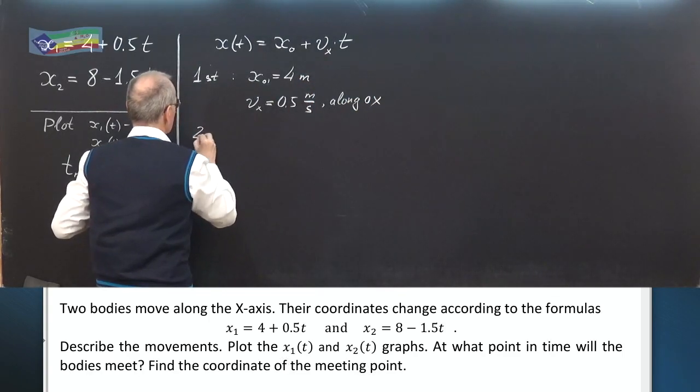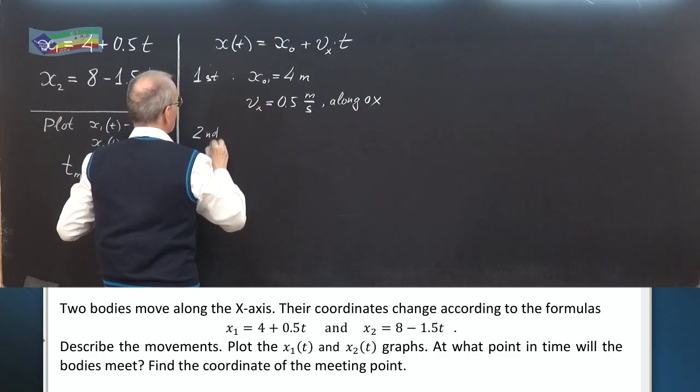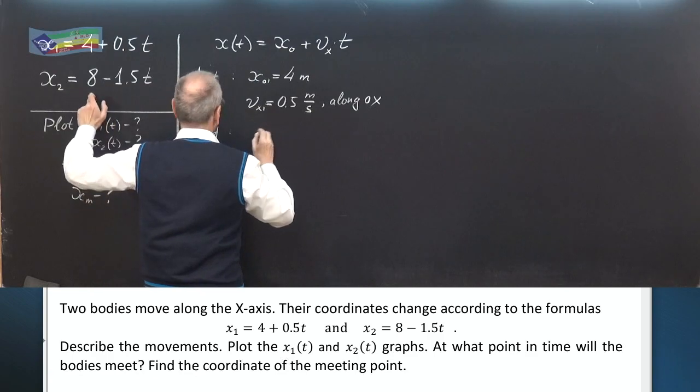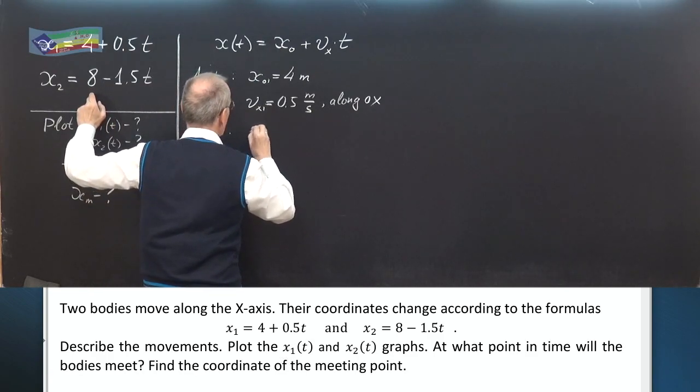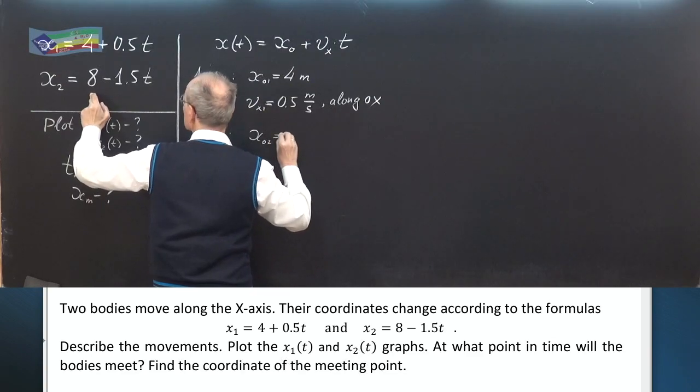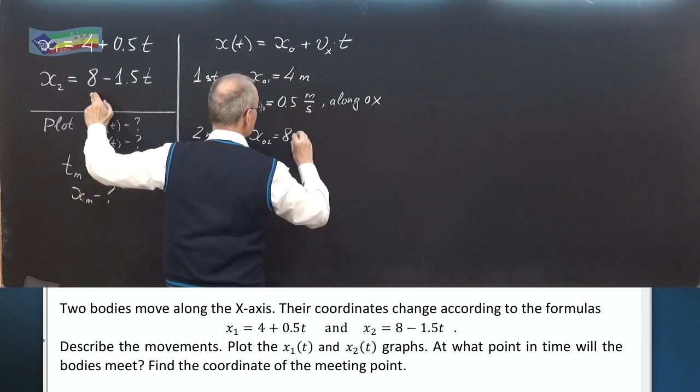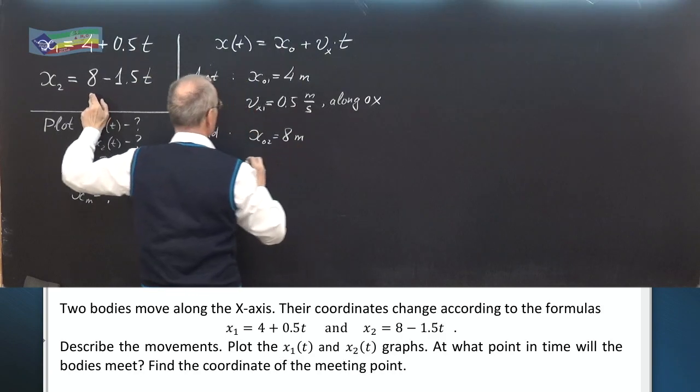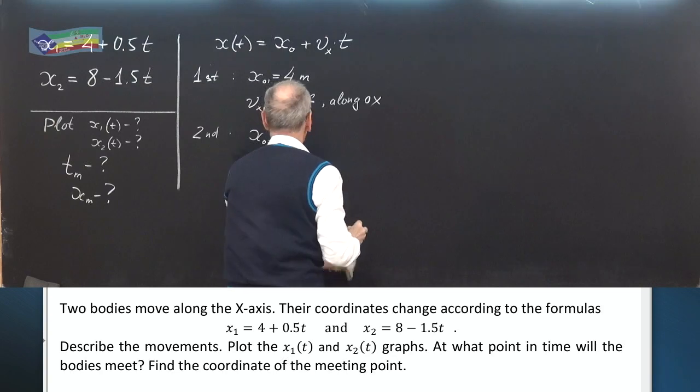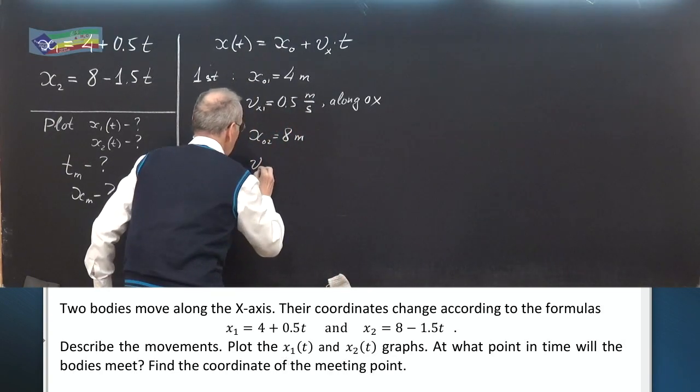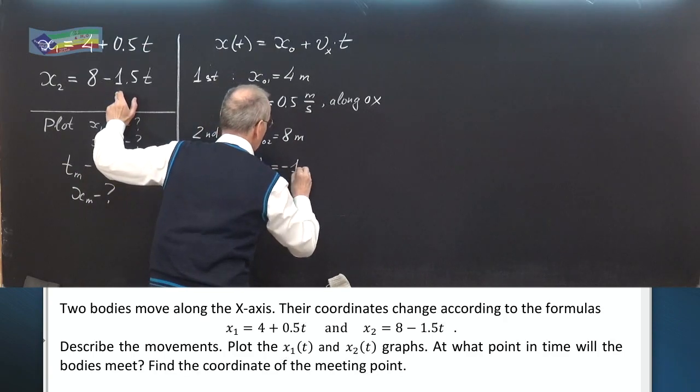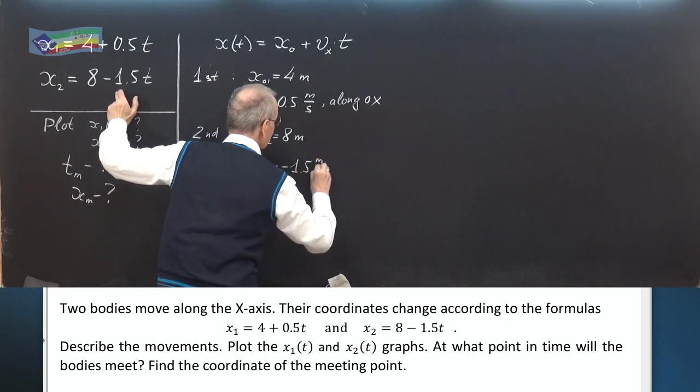The second, initial coordinate x₀ equals 8 meters. And vₓ equals 0.5 meters per second. vₓ equals minus 1.5 meters per second.